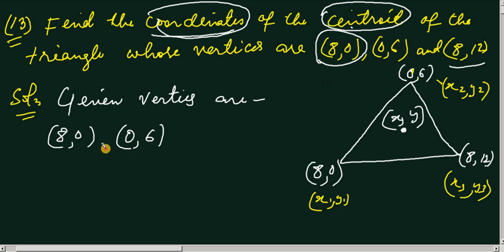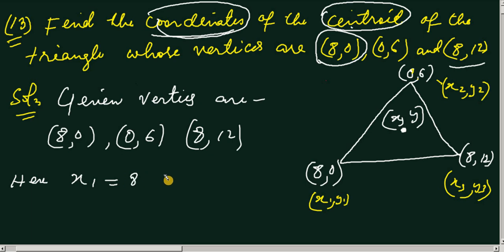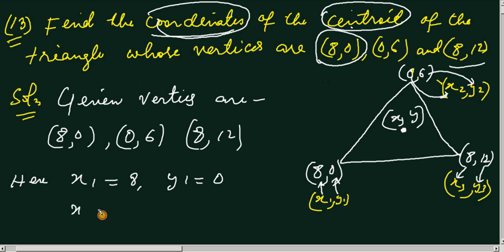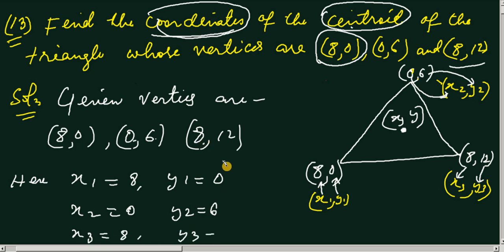The vertices are H(0,0), (0,6), and (8,12). These are the vertex coordinates. So here x1 is equal to 0 and y1 is equal to 0. x2 is equal to 0, y2 is equal to 6, x3 is equal to 8, and y3 is equal to 12.